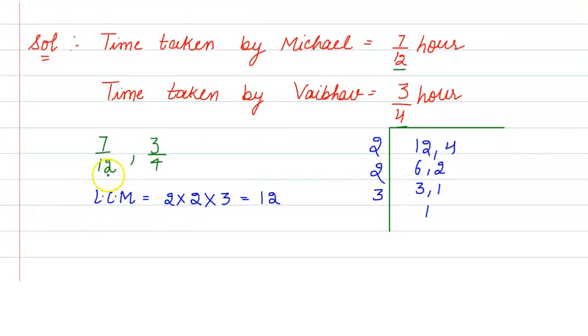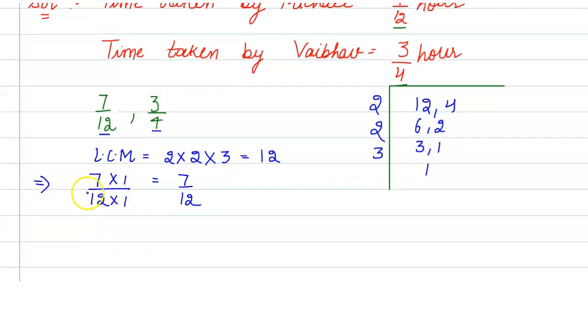So divide 12 by the denominator and then multiply the numerator with the result of the division. 12 divided by 12 is 1. That means 7 into 1 upon 12 into 1, so we get 7/12.